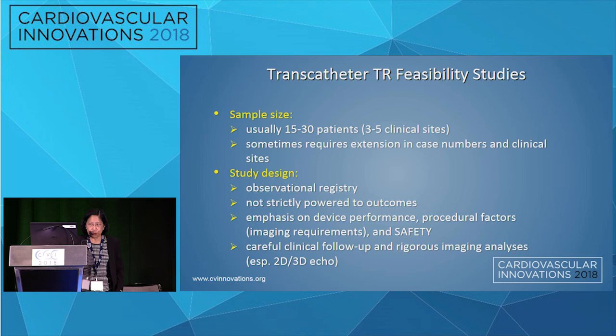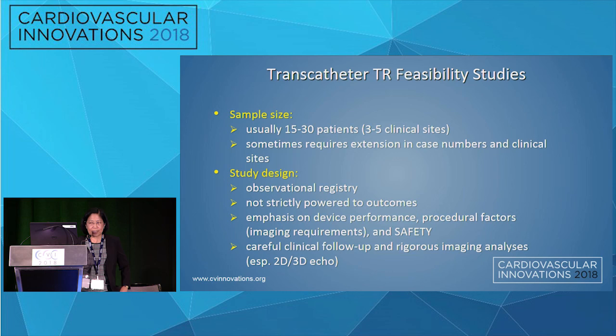Outcomes in early feasibility trials were mainly for safety. When looking at effectiveness — though not really powered for this — many echo measures and some biomarkers were used, though left-sided biomarkers won't work for the right heart. Clinical outcomes are mainly based on functional endpoints: six-minute walk, quality of life assessment, diuretic responsiveness, edema scales, and questionnaires. For pivotal trial design, we're looking at a complex risk-benefit determination, stability of technology, and trial designs to help achieve a new standard of care.